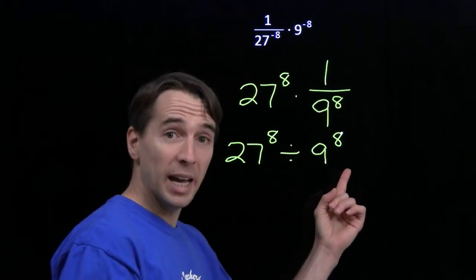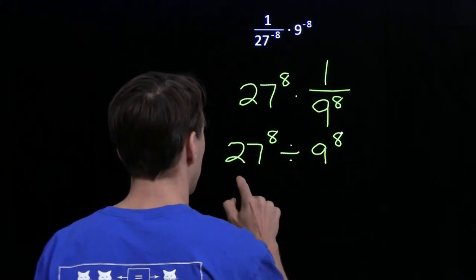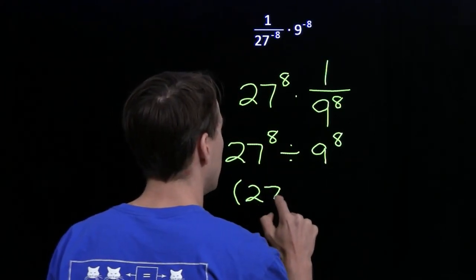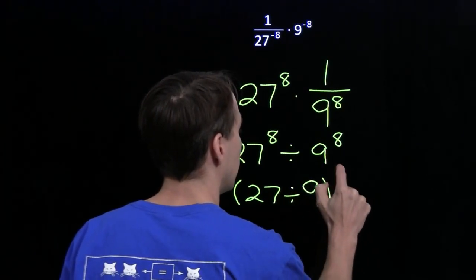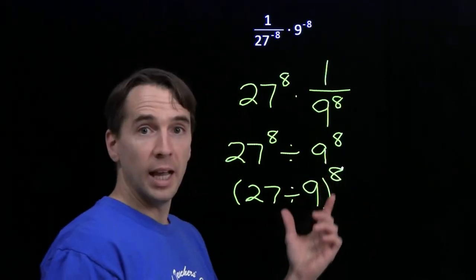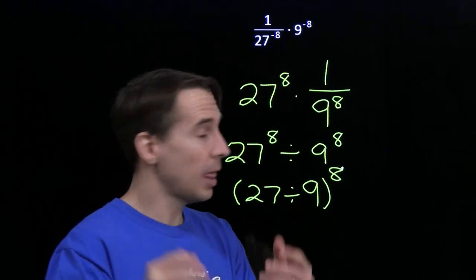And now we have a quotient of powers with the same exponent. We have a rule for that. This just equals 27 divided by 9 raised to the 8th. And 27 divided by 9, that's 3.